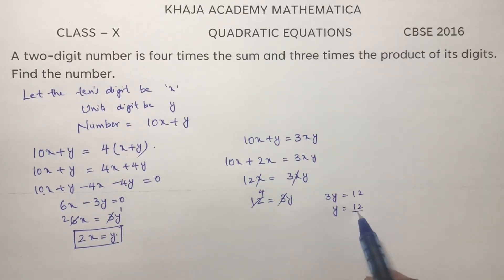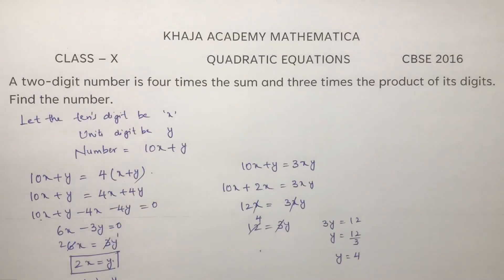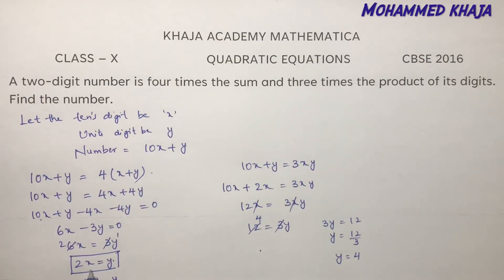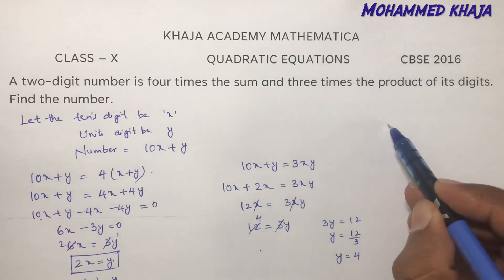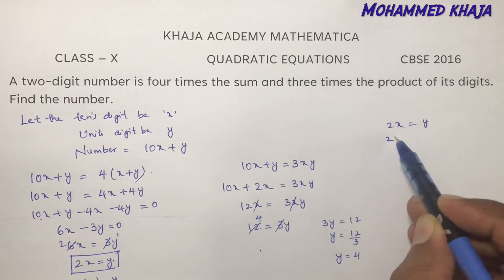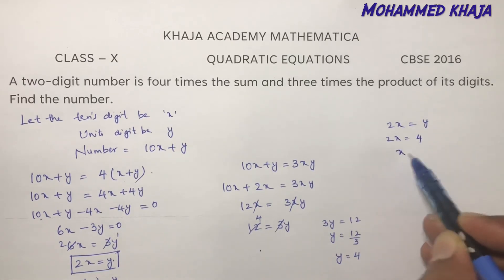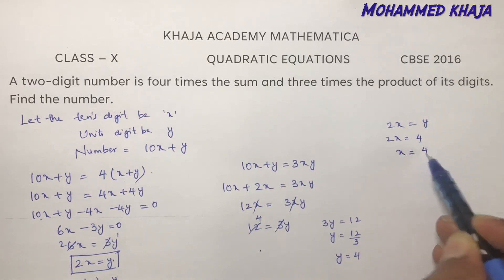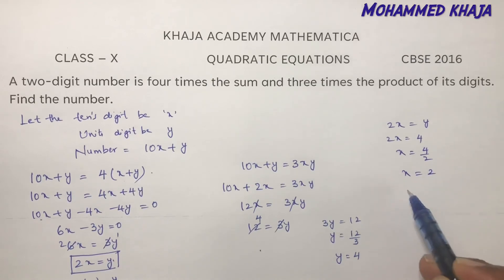From 3y equals 12, we get y equals 4. Substituting back into 2x equals y: 2x equals 4, so x equals 2.